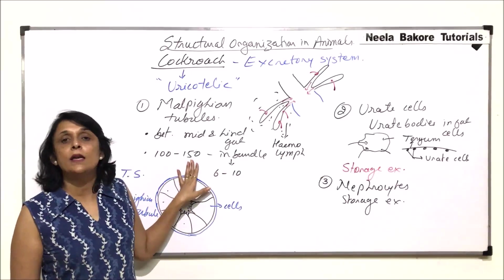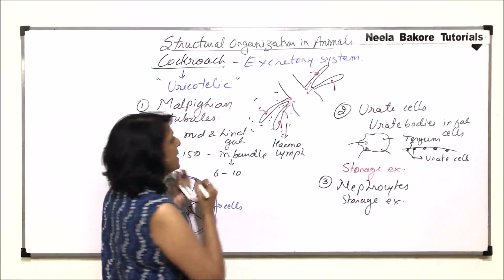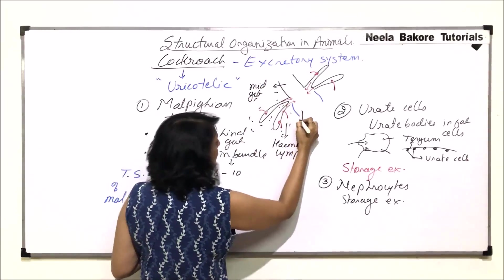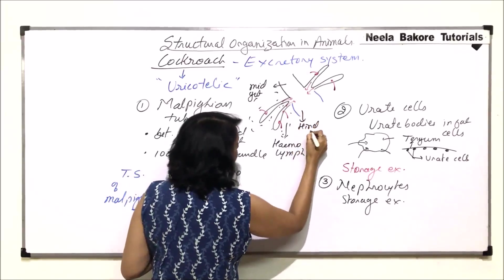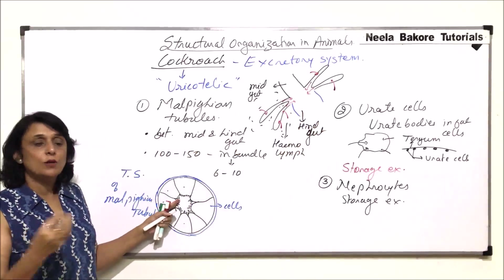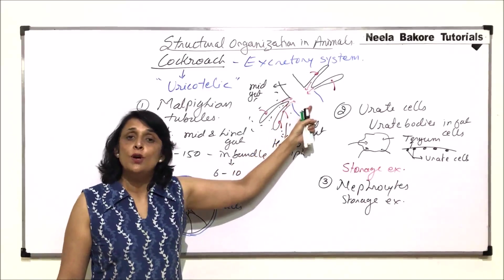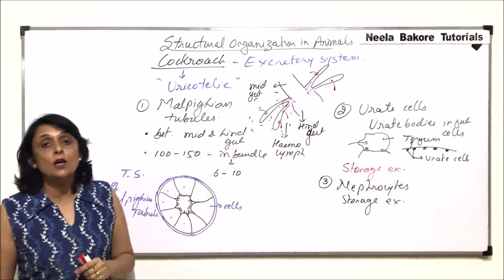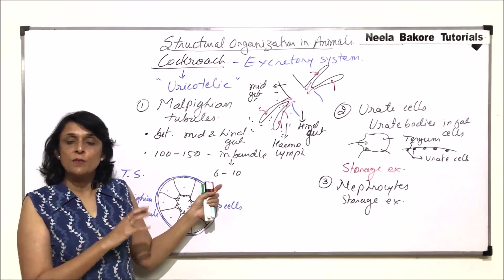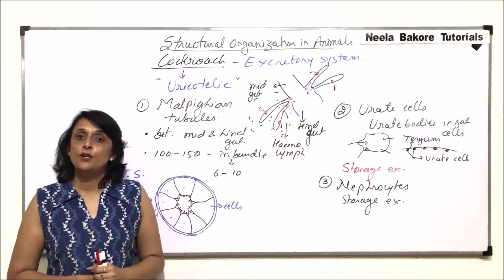So the main structures which help in elimination of nitrogenous waste are the Malpighian tubules, present at the junction of midgut and hindgut. Their inner cellular structure collects all the waste, and the cilia help in conducting the waste up to the alimentary canal, where it is lost along with undigested food. There are also two more cells — urate cells and nephrocytes — which help in the elimination of uric acid.